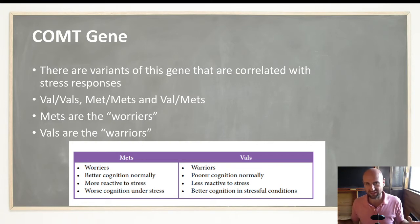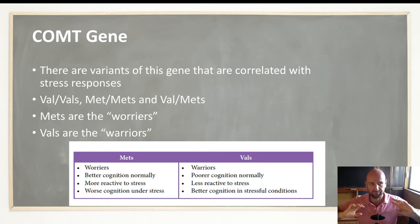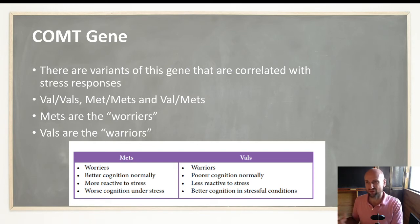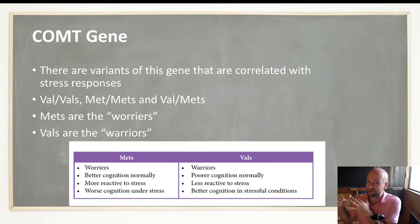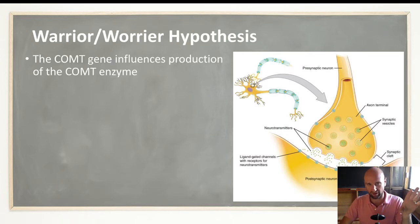Under regular, non-stress circumstances the Mets have better cognition — usually measured by working memory, the ability to think and hold information in mind. However, they have a more reactive stress response and their cognitive skills are actually diminished in stressful situations. The Vals, on the other hand, have not-as-good working memory under regular circumstances, but put them under pressure and they outperform the Mets. This is why they're called the warriors. That's the basis of the warrior-worrier hypothesis.